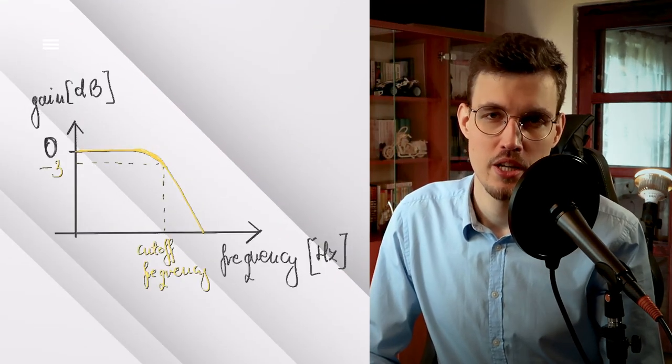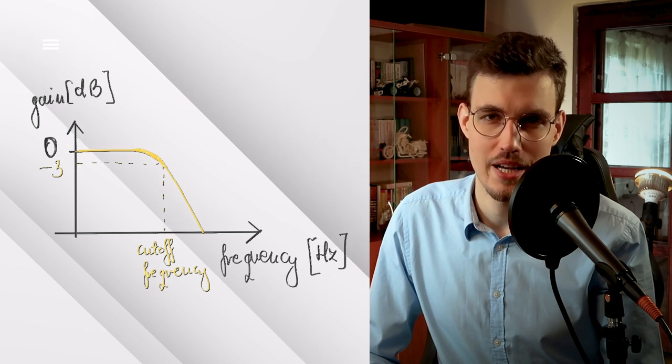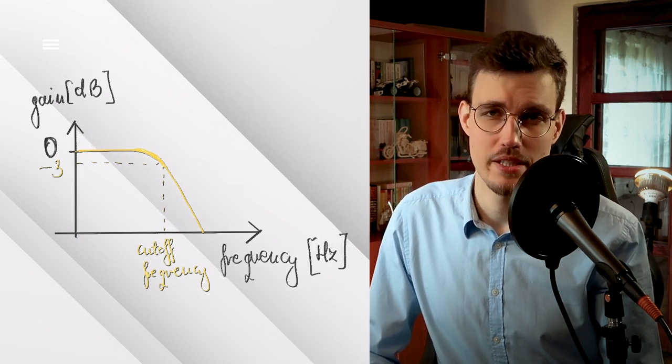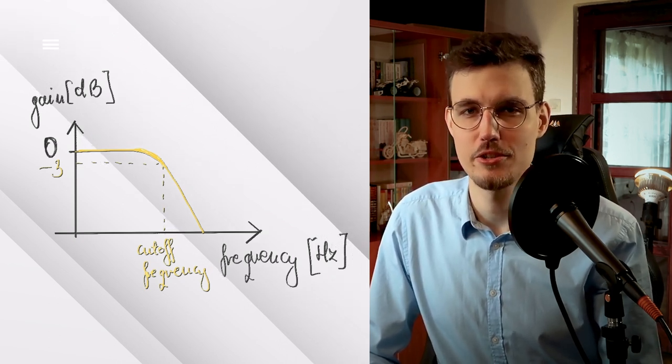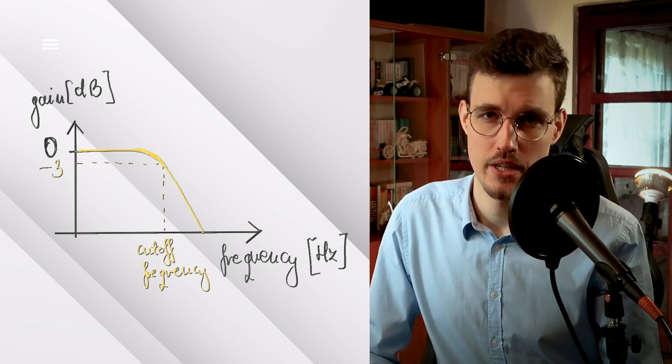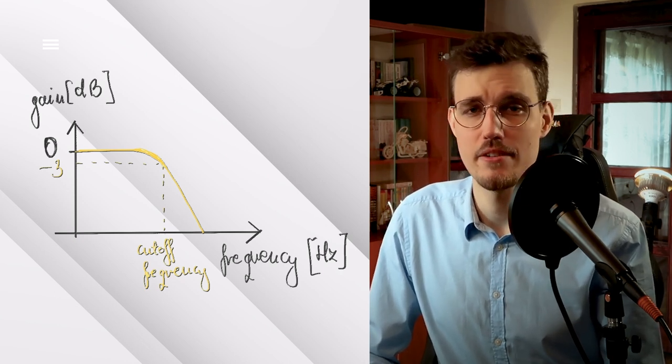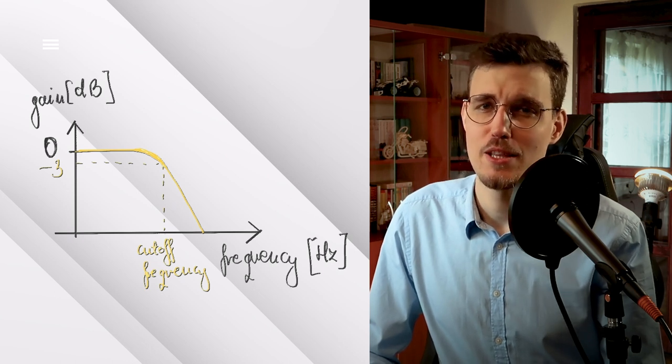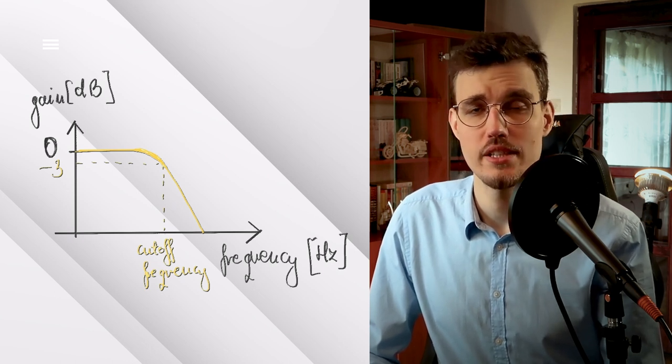For the purpose of this video, we'll define a low-pass filter as a filter that attenuates frequencies above a certain frequency, called the cut-off frequency. The cut-off frequency is typically defined as the frequency at which the attenuation is already 3 dB.